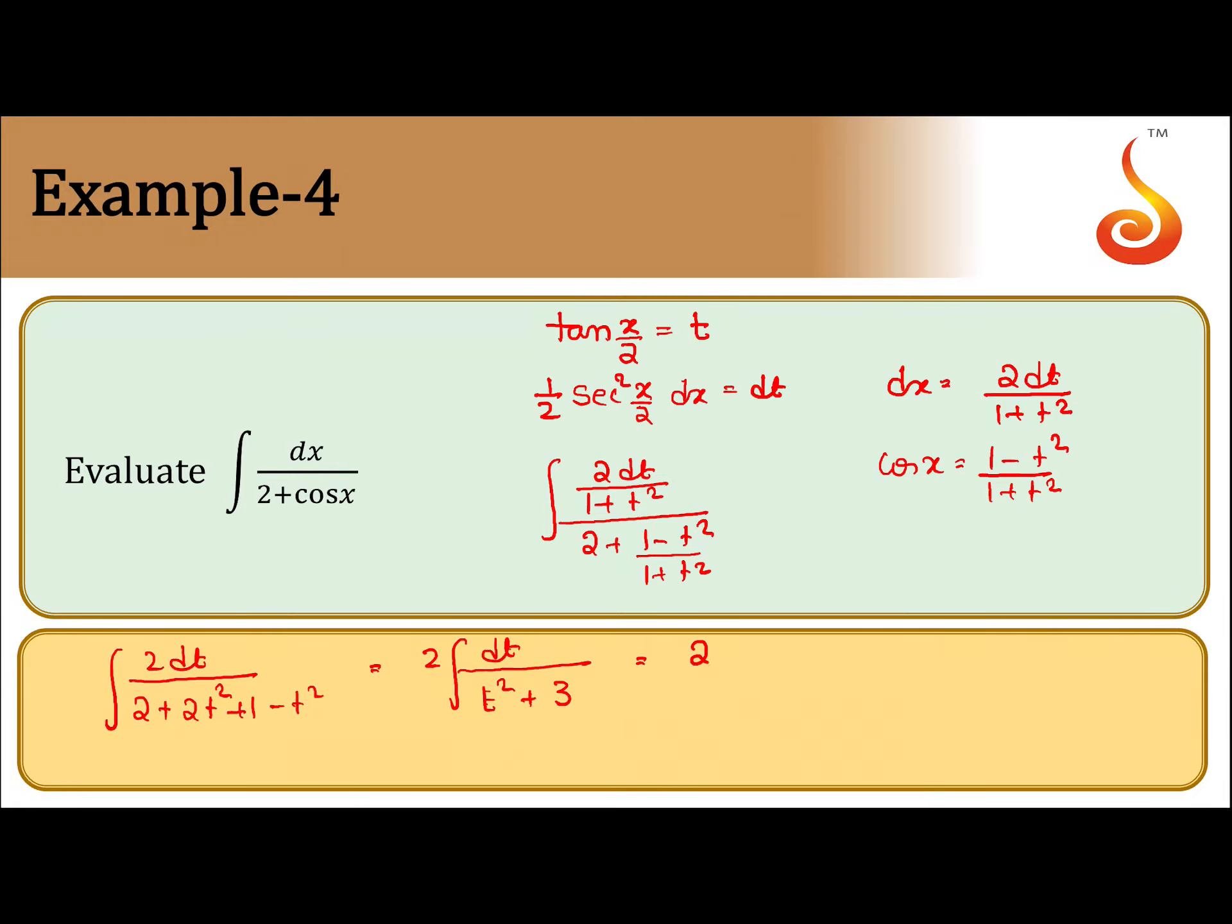So this is nothing but 2 by root 3 tan inverse t by root 3 plus c. This is nothing but 2 by root 3 tan inverse tan x by 2 by root 3 plus c. Here we use the formula dx by x square plus a square is 1 by a tan inverse x by a. So final answer is 2 by root 3 tan inverse, put a bracket, tan x by 2 by root 3 plus c. This is the final answer.